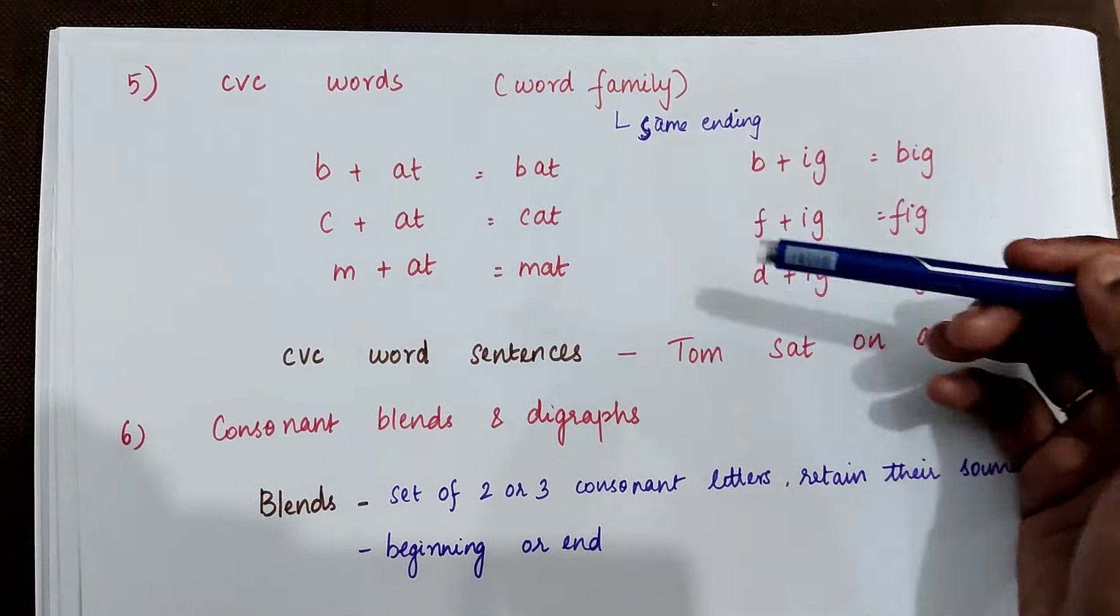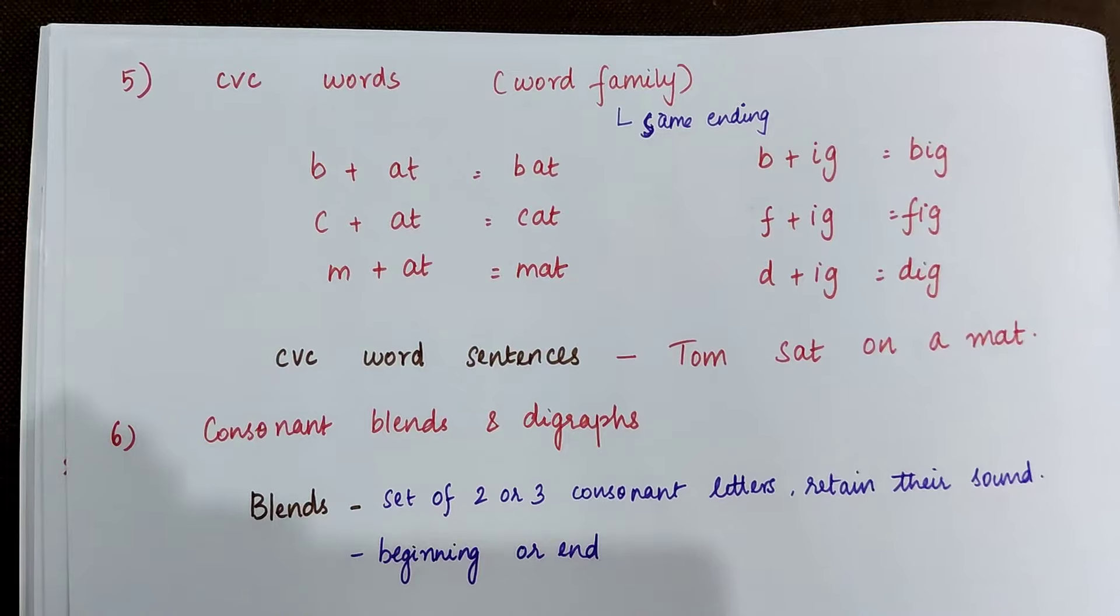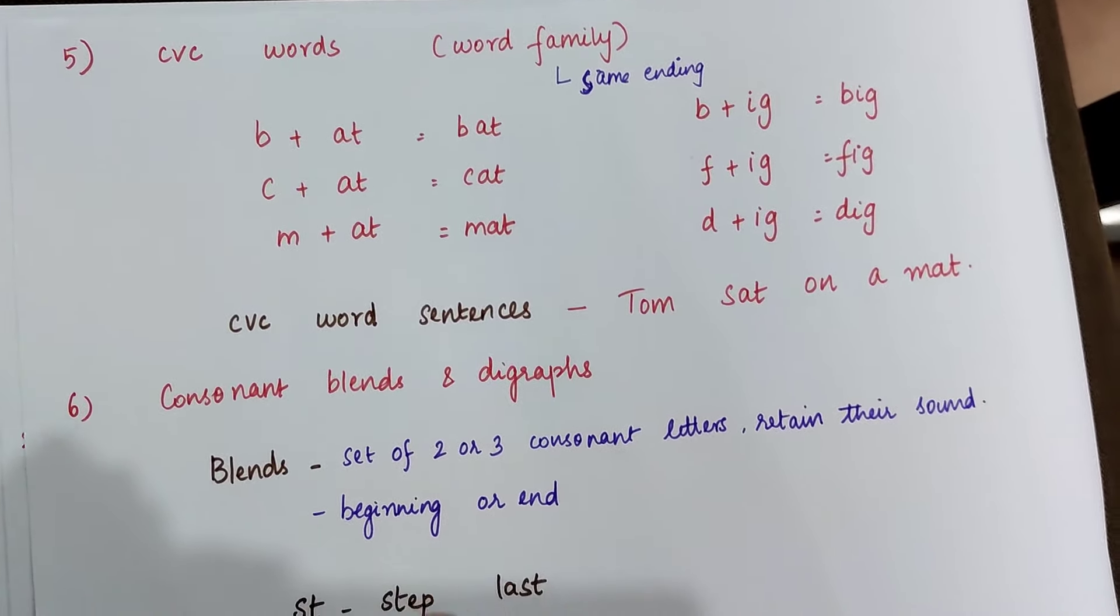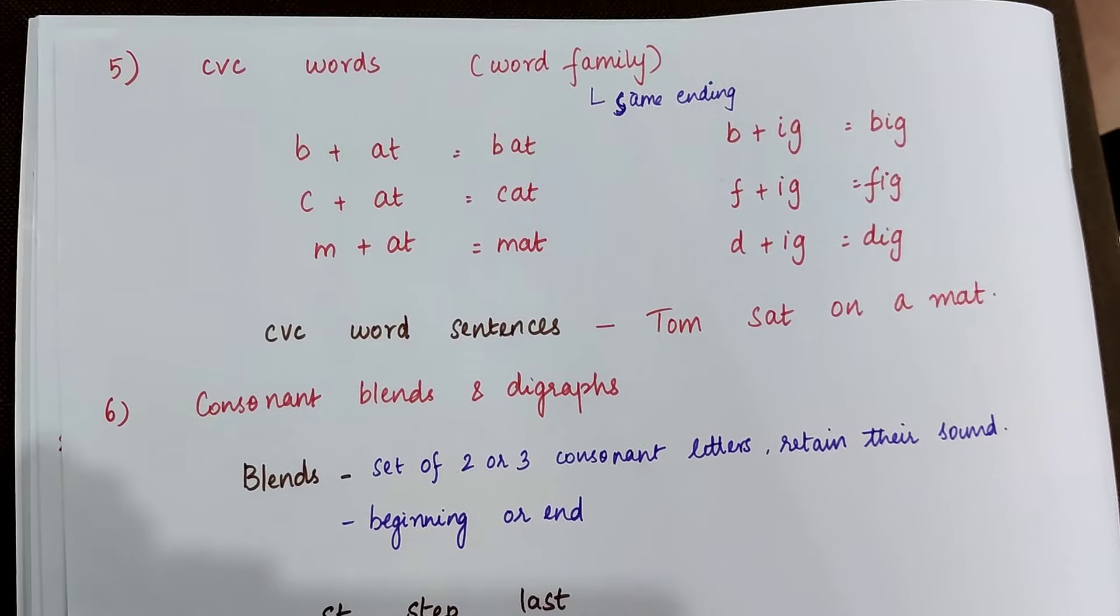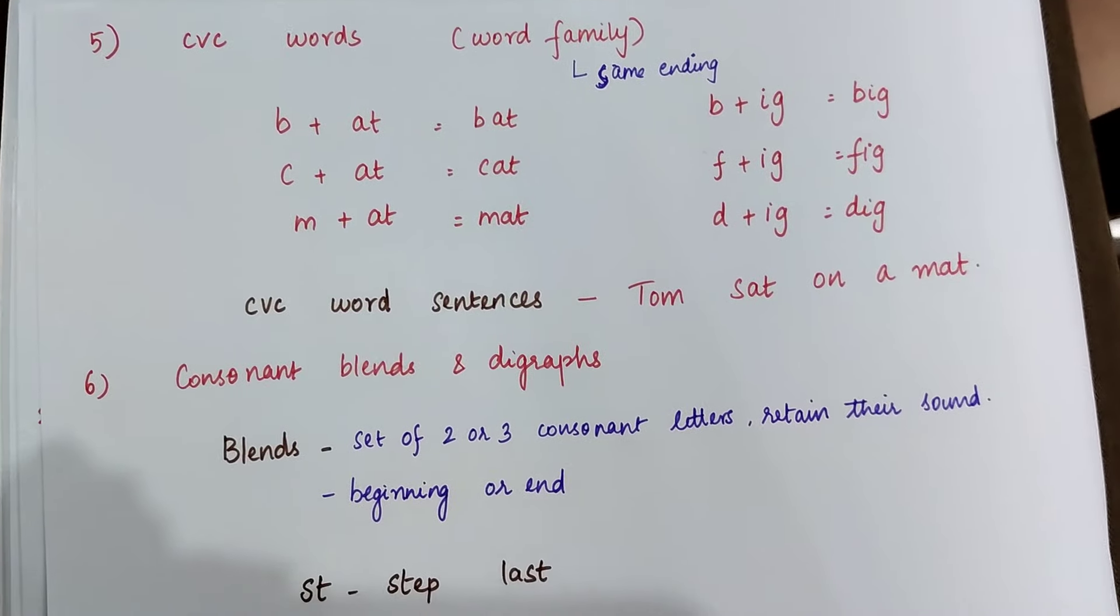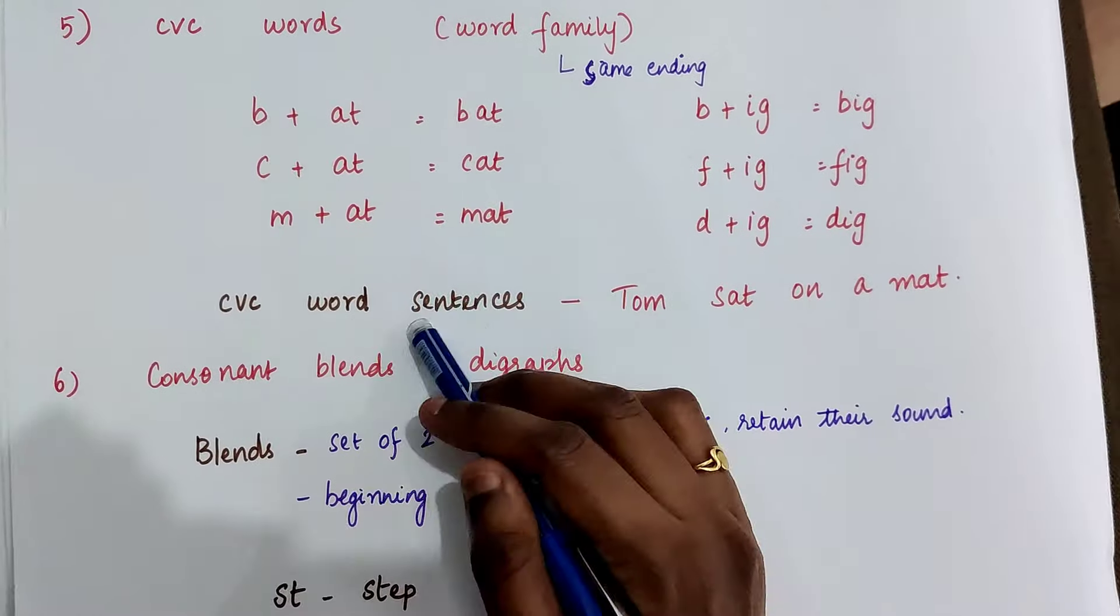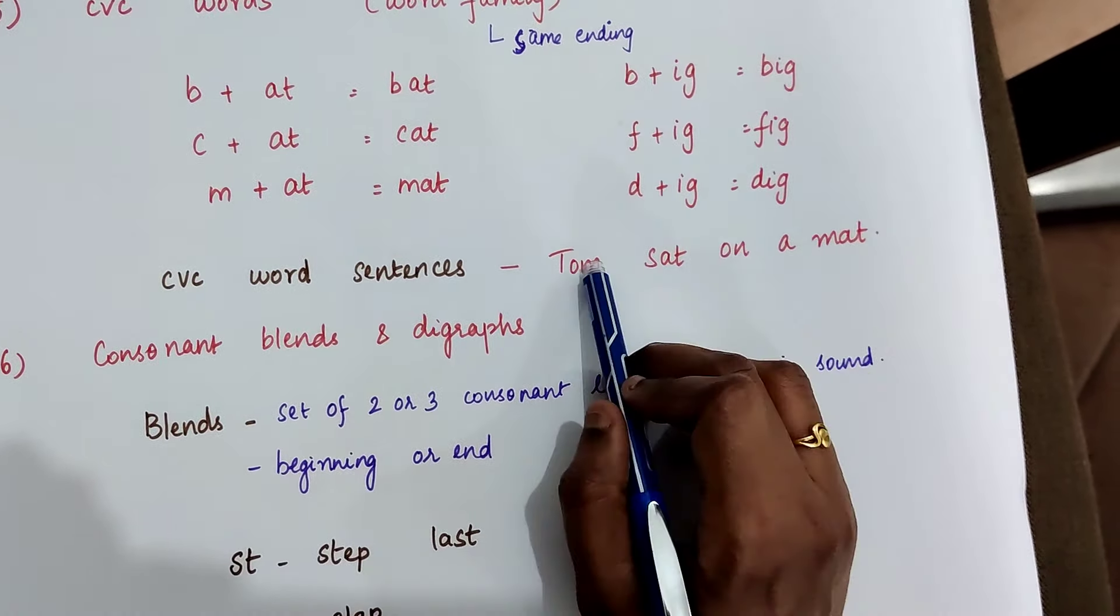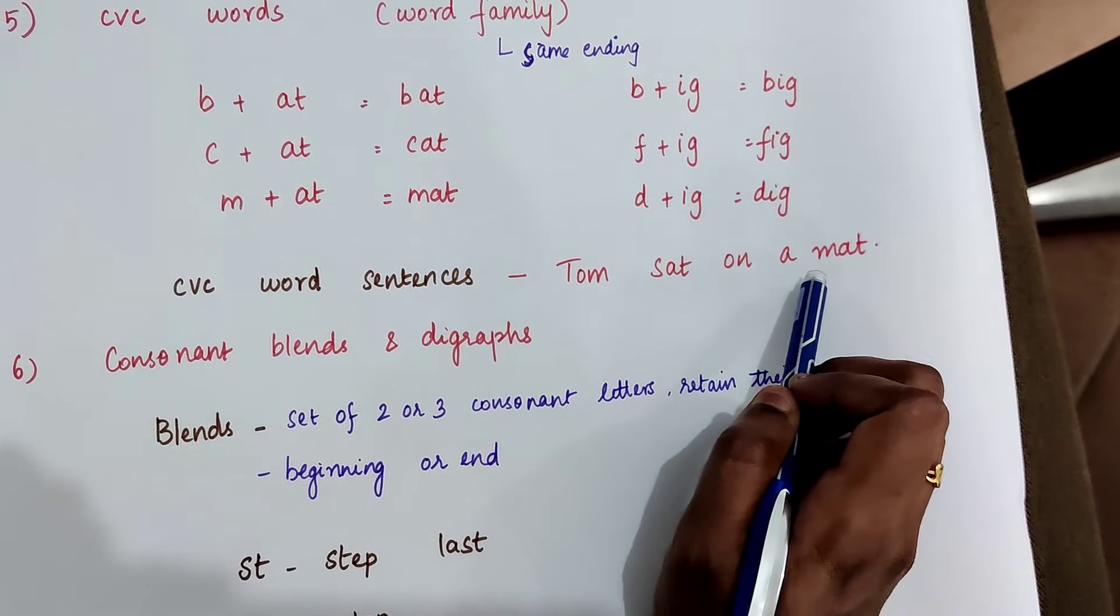Similarly, we have a lot of word families with which we can familiarize the child with the CVC words. So once the child is comfortable with reading the CVC words, we can also introduce the sentences, short sentences with CVC words like this: Tom sat on a mat.